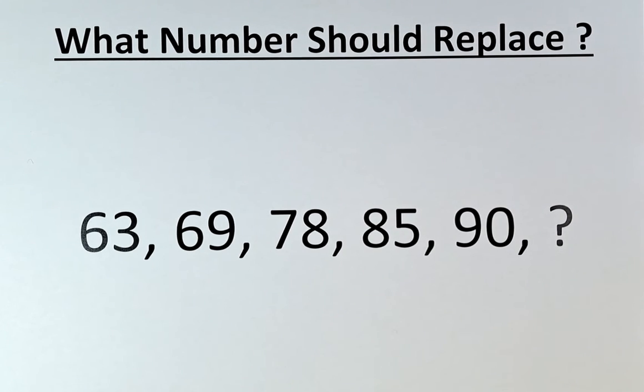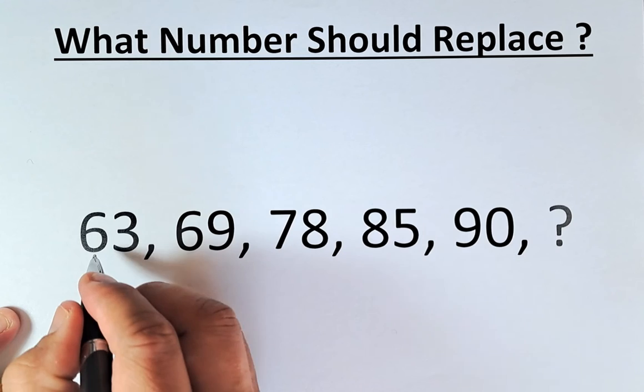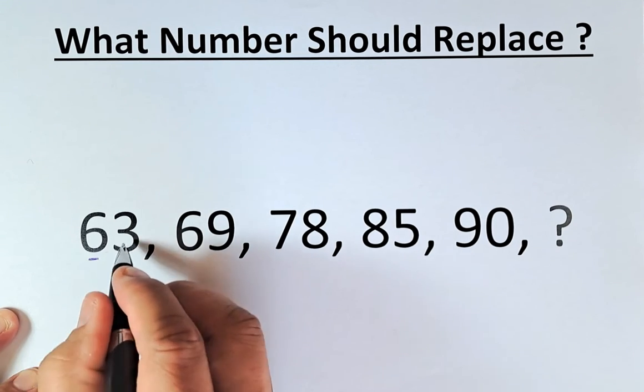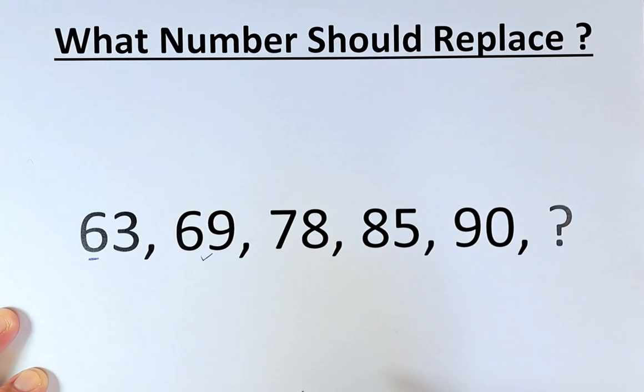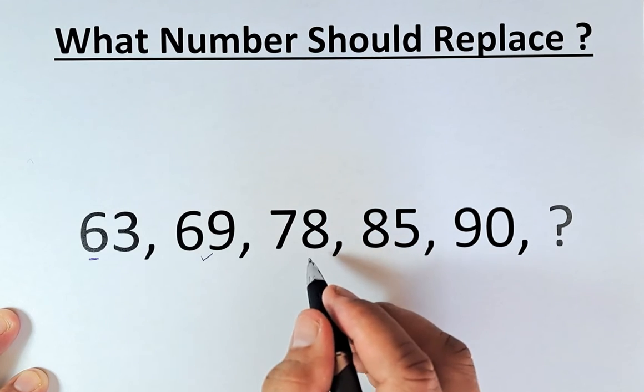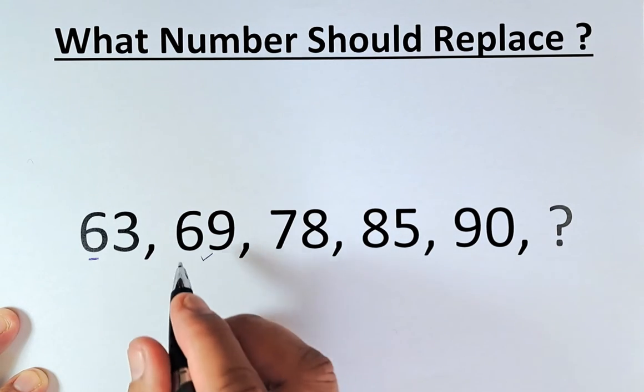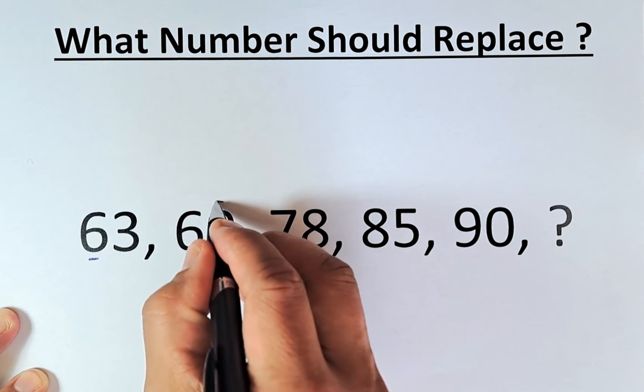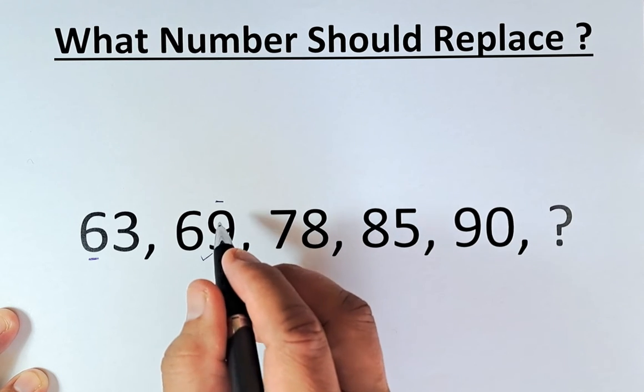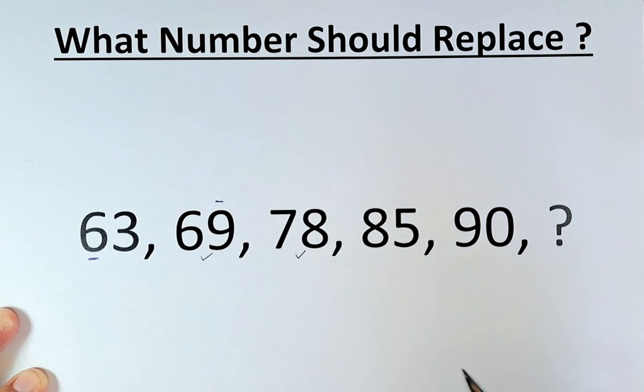So 63 to 69, and then 69 to 78. What they did is, to get 63 to 69, they add the first number here. So 63 plus 6 will give us 69. 69 to 78, they do a different thing. Instead of adding the first number, they add the second number. So 69 plus 9, that will give us 78.